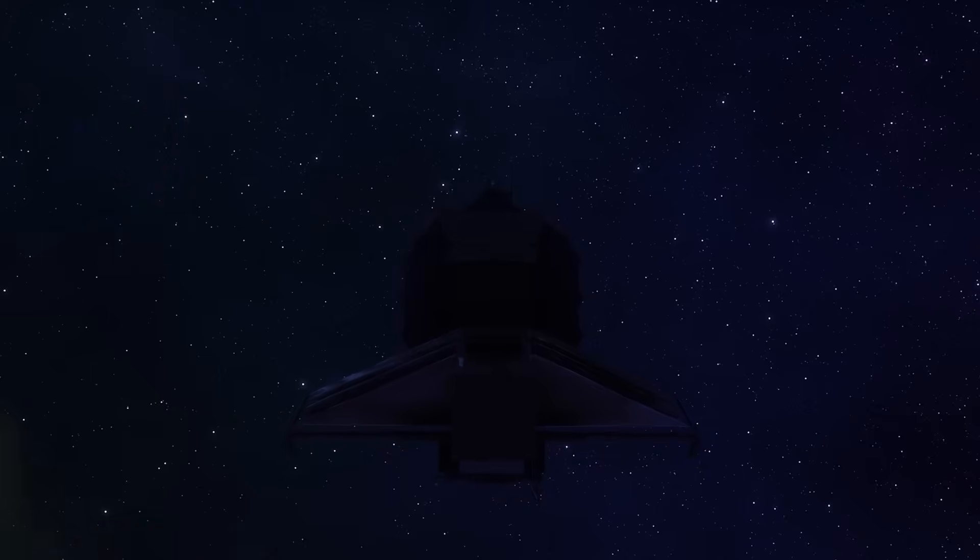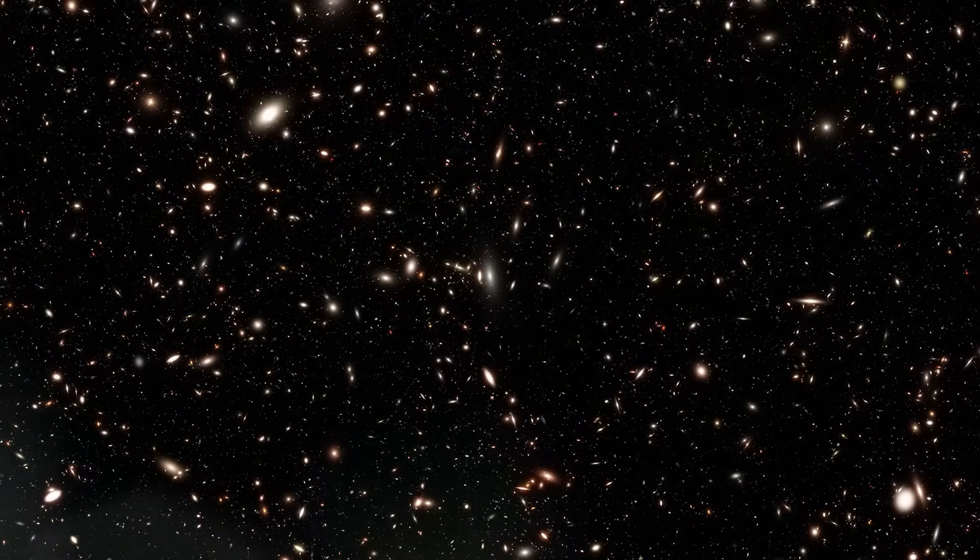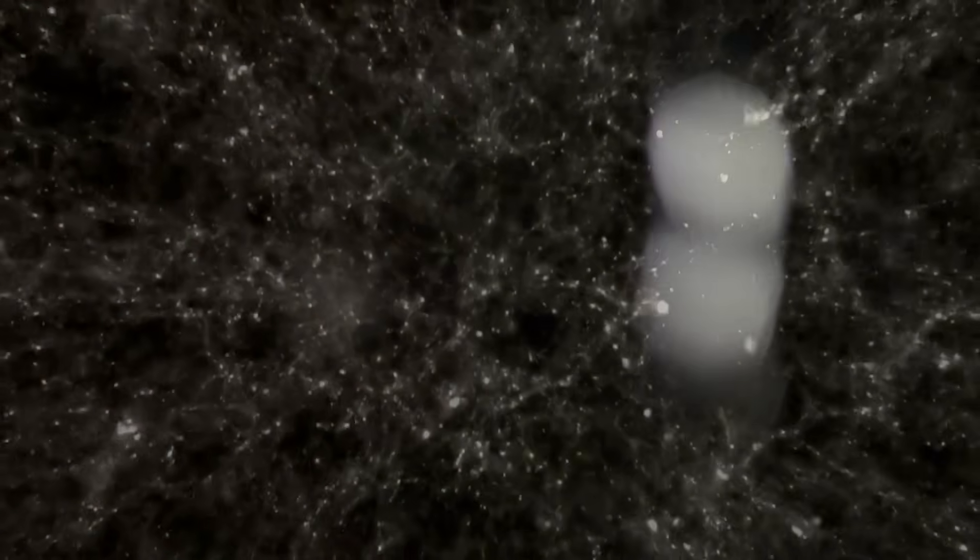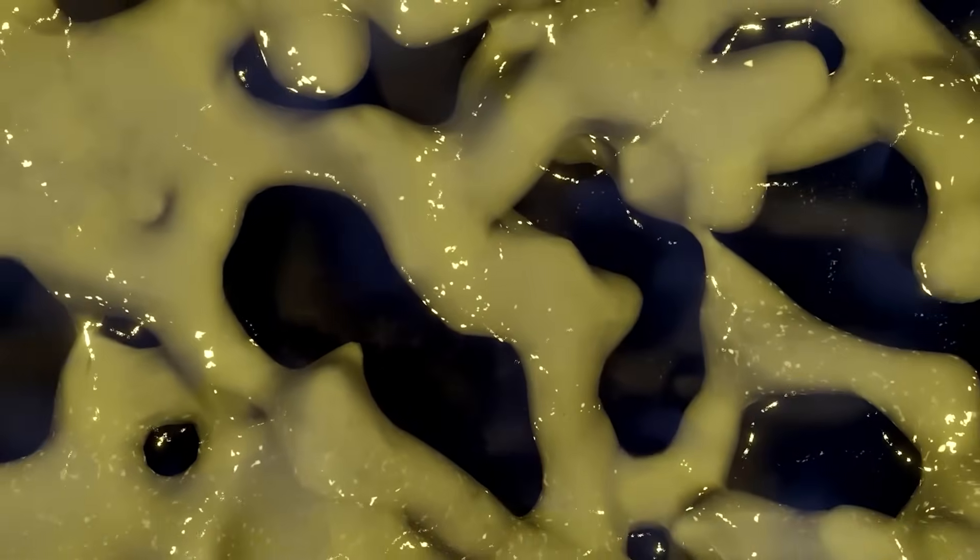But Webb wasn't done. When astronomers zoomed in deeper, they found more of these anomalies. Whole clusters of massive galaxies, glowing in defiance of every formation model we've ever trusted. Either the physics of the early universe are wrong, or we're looking at something we've never seen before.